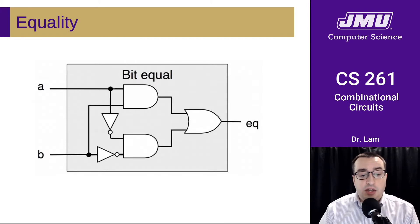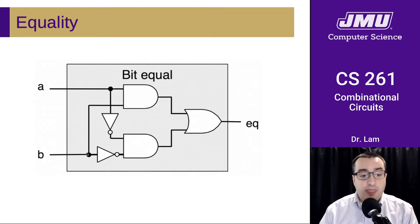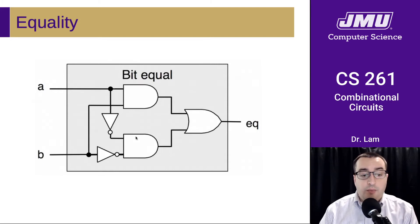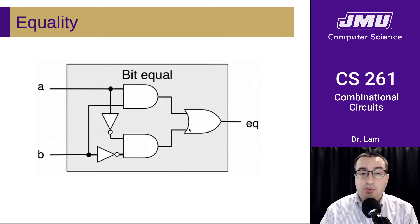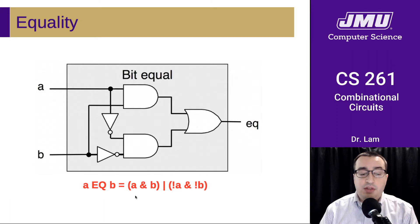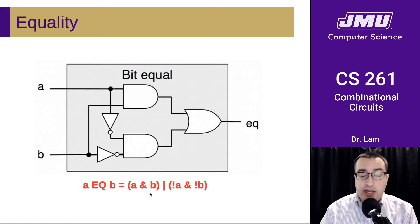Here's a circuit that is a bit equality circuit. It takes two inputs, A and B. You can see there is an AND gate here taking both of those values as inputs. We have another AND gate that's taking the opposite of the inputs. Then we have an OR gate that takes the result of those two ANDs and combines them for the final result. In Boolean form, A equals B is equivalent to (A AND B) OR (NOT A AND NOT B).